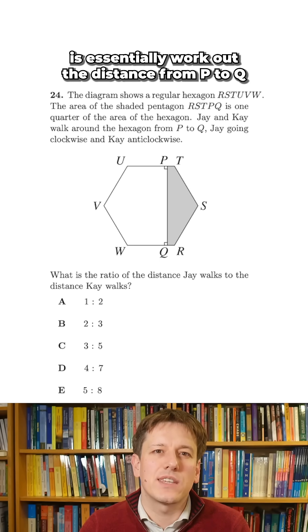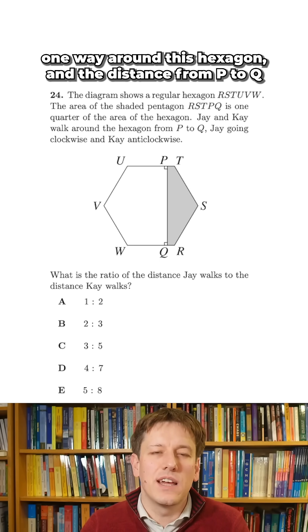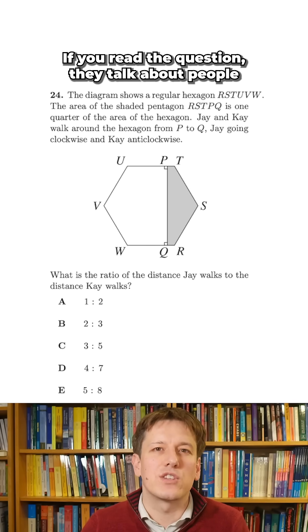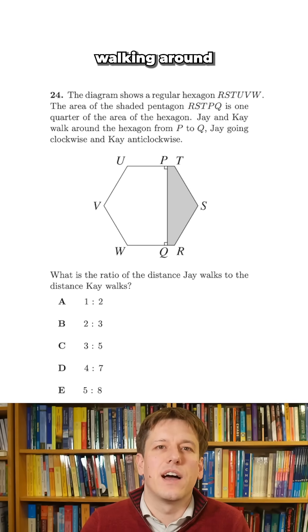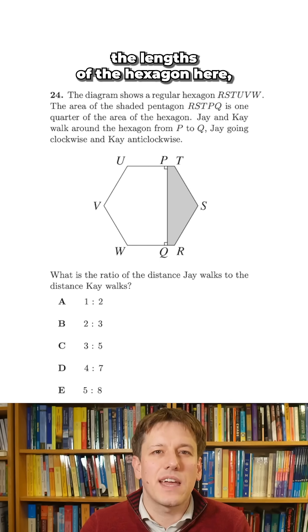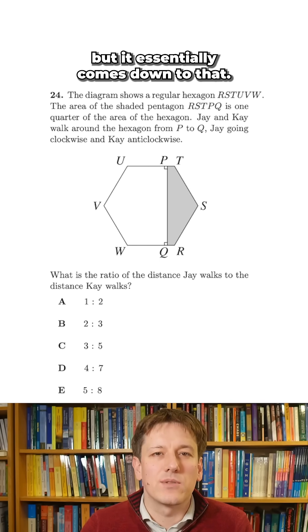What we're trying to do here is essentially work out the distance from P to Q one way around this hexagon and the distance from P to Q the other way around the hexagon. If you read the question, they talk about people walking around the length of their hexagon here, but it essentially comes down to that.